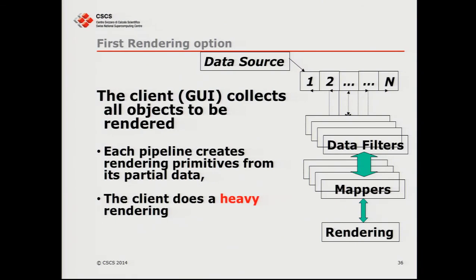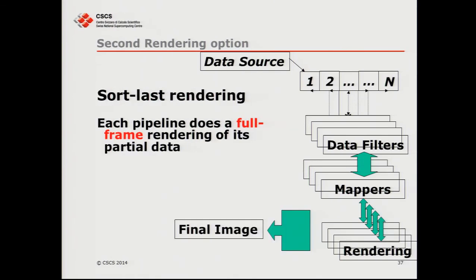This is why I call it heavy rendering — all of a sudden we have a parallel cluster here and our desktop here, and the desktop has to do the rendering of the contribution of all the parallel servers. This can be a very large object; in the bone simulation example, the object is 120,000 polygonal elements. The second option is to have every parallel pipeline do its own rendering using its local data, and then there is a final composition phase using sort-last rendering.